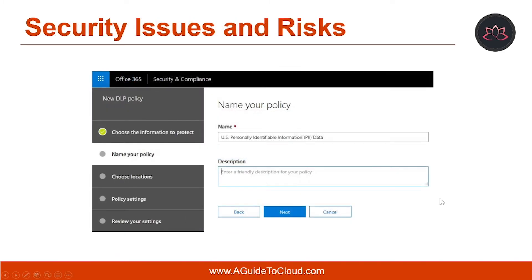Next is security issues and risk. ATA detects security issues and risk, including broken trust — an example being a trust relationship broken between a workstation and domain controllers. It can also detect weak protocols and ciphers, which include SSL, SSL version 3, SHA, and so on. Additionally, it can detect non-protocol vulnerabilities, which include DNS poisoning, DoS attacks, and so on.